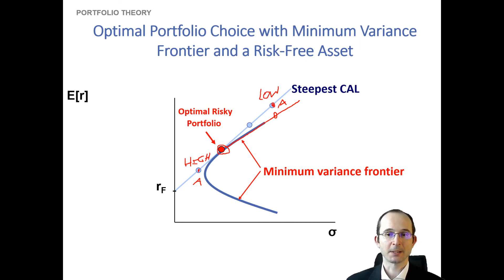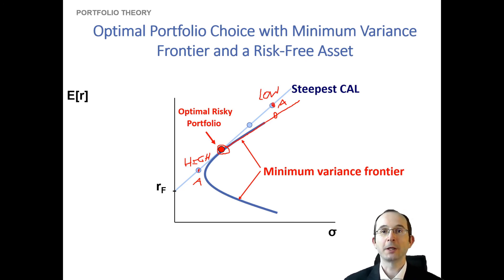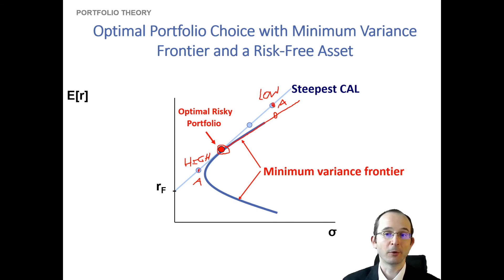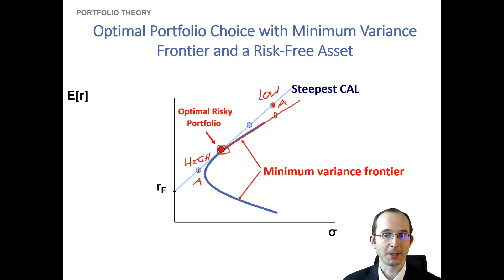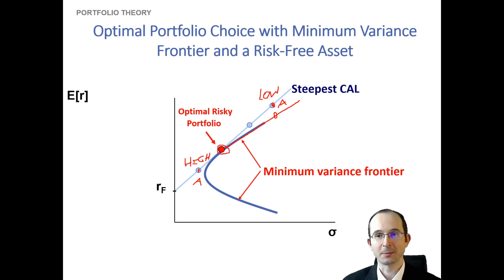This was a simple two-asset illustration useful for exploring the math behind creating an optimal portfolio and therefore the steepest capital allocation line. In the next discussion, we'll go through an example of how to create a more functional — though perhaps a bit more opaque — capital allocation line for a multi-asset portfolio.